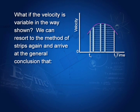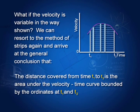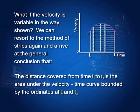If the velocity is changing in a non-linear way, we again take the same route: draw strips, cover the whole area, and find that the distance covered equals the area under the curve from time t1 to time t2. The area of each strip is given by v times dt. So the whole area equals the area under the velocity time curve from time t1 to t2. The distance covered from time t1 to t2 is the area under the velocity time curve bounded by the ordinates at t1 and t2.